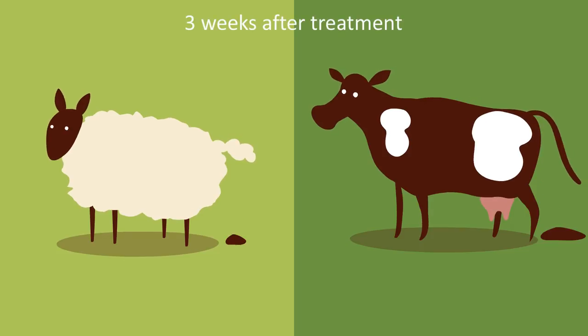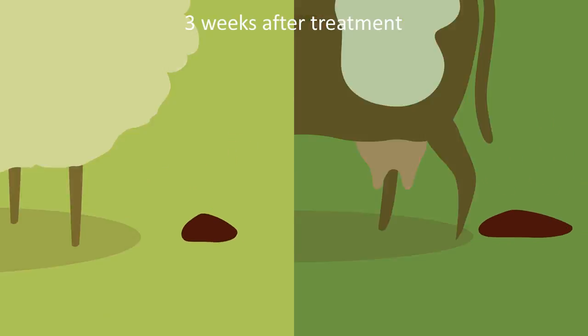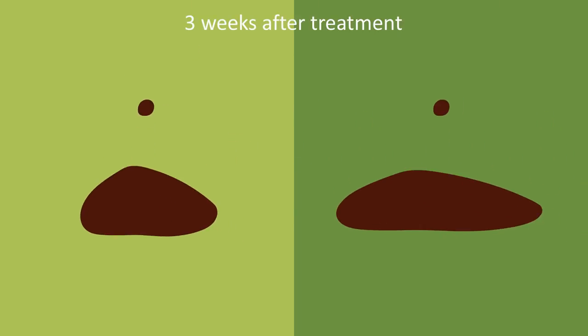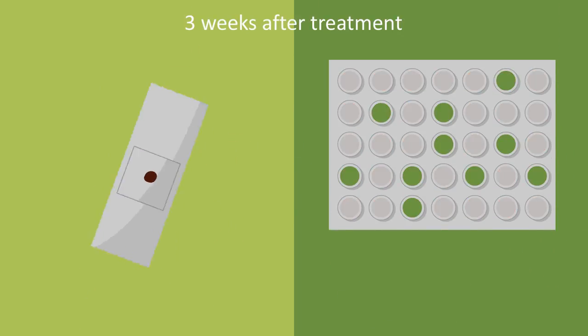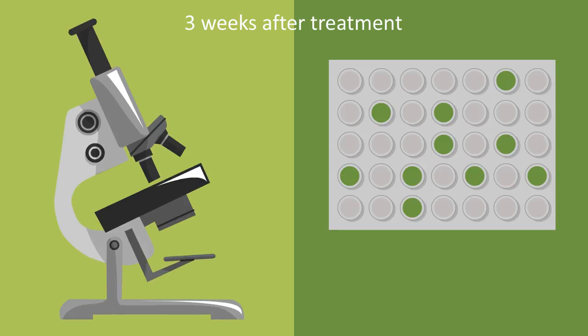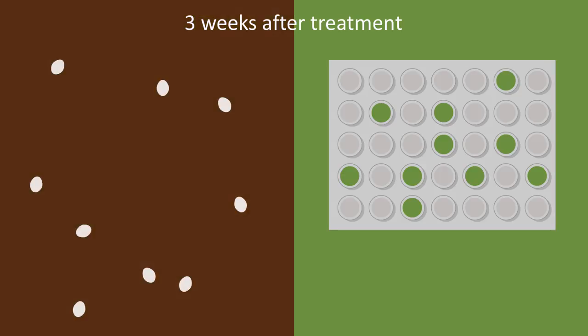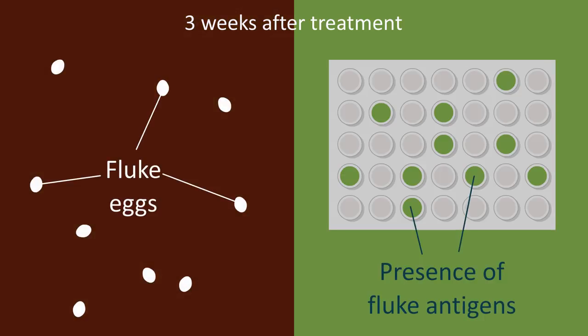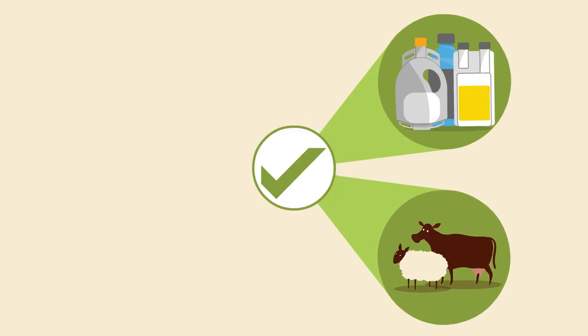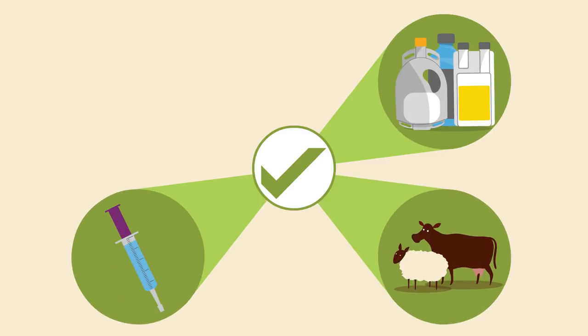To check how well products are working on your farm, testing faecal samples three weeks after treatment would be a good place to start — but discuss this with your vet. It is important to know which active ingredient is in any product being used, and that you use the right product for the right animals, at the right dose, at the right time.